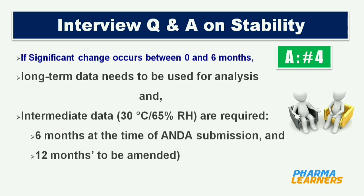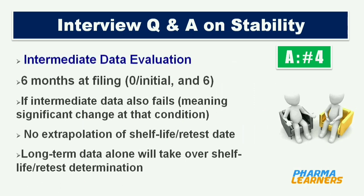If significant change occurs between 0 and 6 months, long-term data needs to be used for analysis, and 6 months intermediate data are required at the time of ANDA submission, with further 12 months data to be amended later on. Six months intermediate data is required for evaluation at filing, which includes the 0 and 6 months time points. If intermediate data also fails, no extrapolation of shelf life or retest date is allowed, and long-term data alone will determine shelf life or retest date.